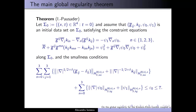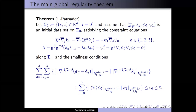Now I can state the first result — the global regularity theorem. This is the qualitative theorem saying that we can extend the solution. If we start with initial data at time t equals zero which is small, we can extend the solution forever. To state it precisely: the surface sigma nought is the surface t equals zero in four-dimensional space. We assume that we have an initial data set satisfying the usual constraint equations, and more importantly, we assume smallness.